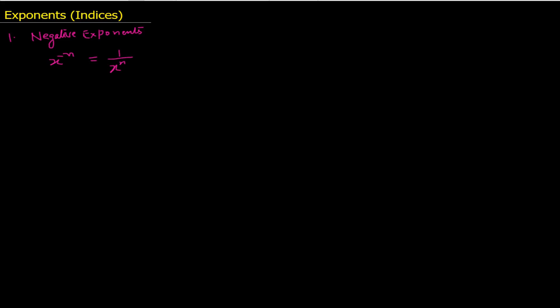But let us define this in the same way we have defined x raised to the power n. How did we define x raised to the power n? We defined it as: x raised to the power n means that we have to multiply x, n times, whatever the number n is. So this was the way we defined x raised to the power n. Now how can we define x raised to the power minus n in a similar manner?